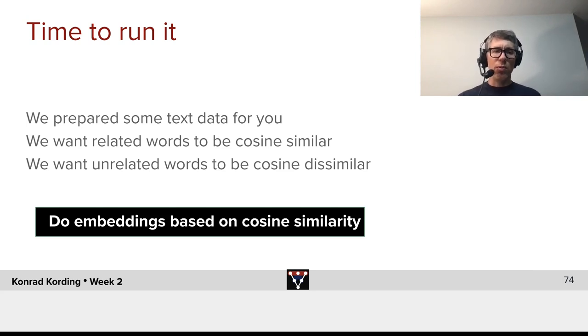And that's time to run it. Alright, we prepared some text data for you. We want related words to be cosine similar, and unrelated words to be cosine dissimilar. Now, learn the embeddings based on cosine similarity.